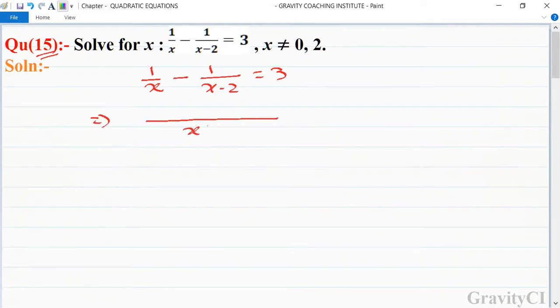Now we take the LCM, x and x into x minus 2, so it is equal to 3. Here x and x cancel, so minus 2 upon x squared minus 2x is equal to 3. After cross multiplication we get 3x squared minus 6x equal to minus 2.